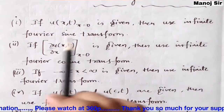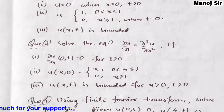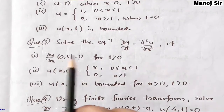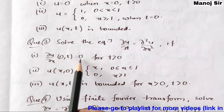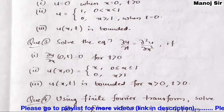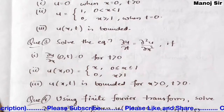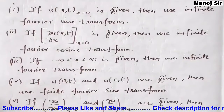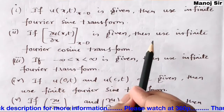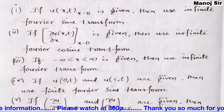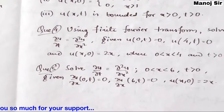Coming to the third question: here you can see ∂u/∂x is given as 0 when x = 0. Since ∂u/∂x is given at x = 0, we are going to use the infinite Fourier cosine transform.